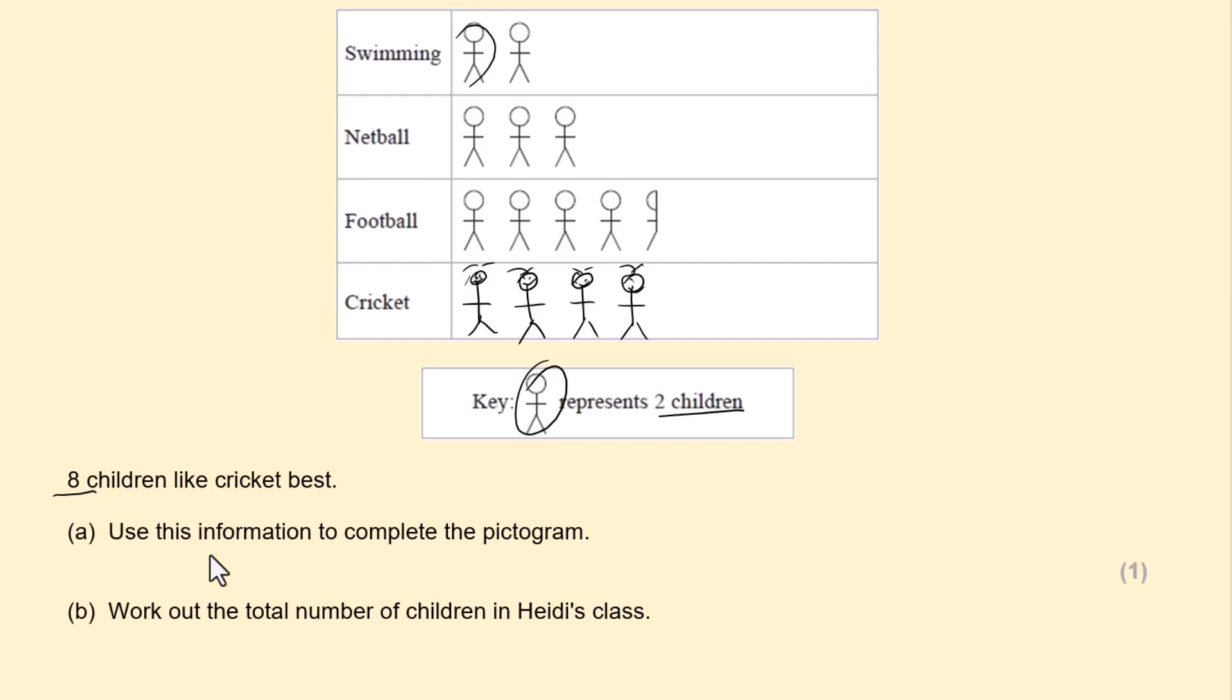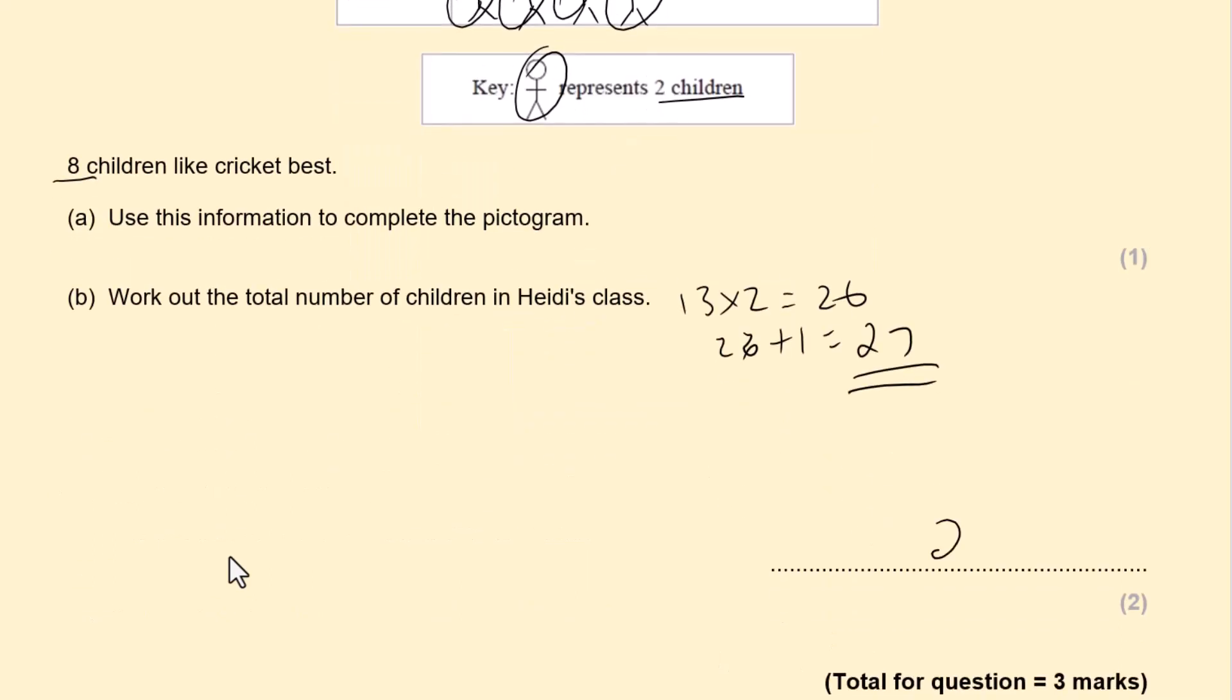Anyway, let's not waste time in your exam. Work out the total number of children in Heidi's class. So we have 1, 2, 3, 4, 5, 6, 7, 8, 9, 10, 11, 12, 13. Full ones. 13 times 2. Which is 26. And we have half, which represents 1. 26 add 1, which is 27. So total number of children in Heidi's class is 27. Three marks all together.